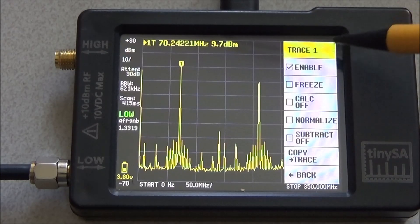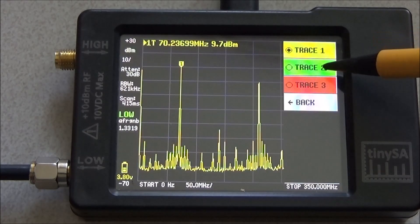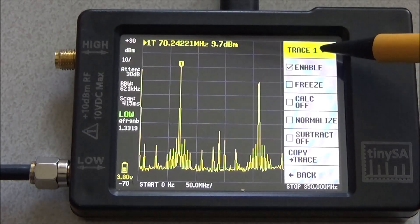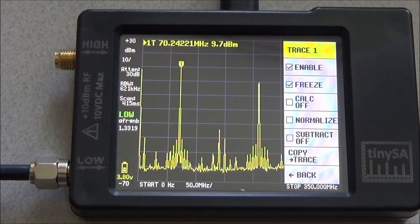In the trace menu you can select which trace to operate upon - trace 1, 2, or 3, and then you can set certain features of the trace. You can freeze the trace.